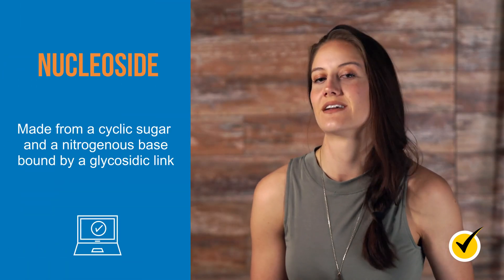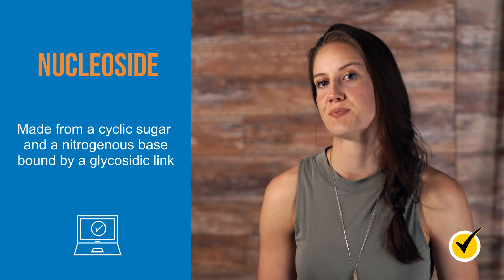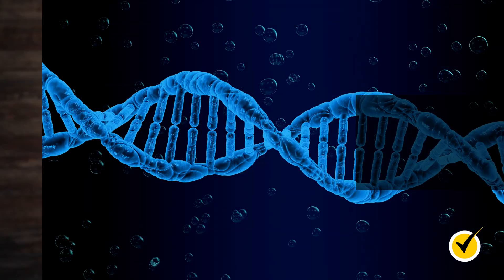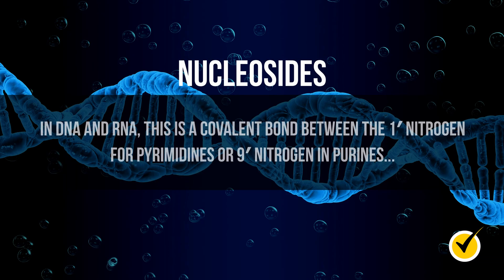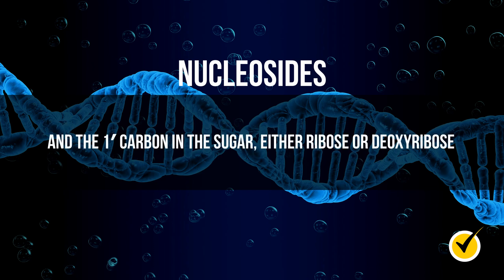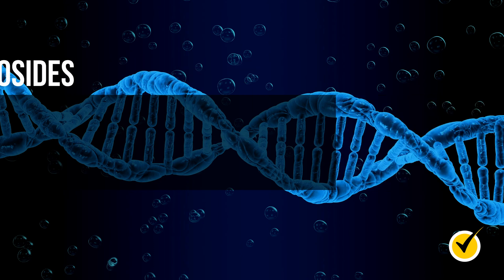To get started, the basic component of DNA and RNA is a nucleoside. This is made from a cyclic sugar and a nitrogenous base, bound by a glycosidic link. In DNA and RNA, this is a covalent bond between the 1' nitrogen for pyrimidines, or 9' nitrogen in purines, and the 1' carbon in the sugar, either ribose or deoxyribose.